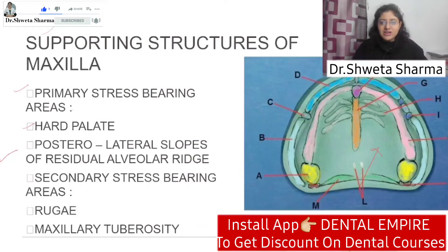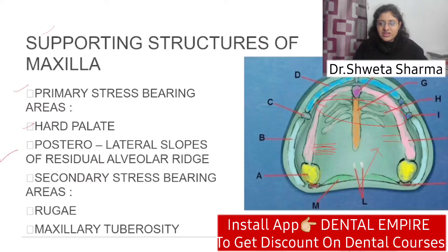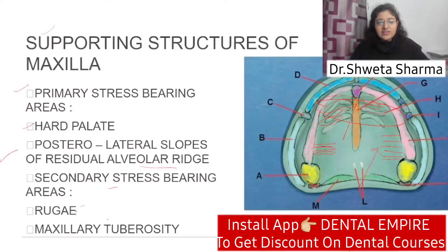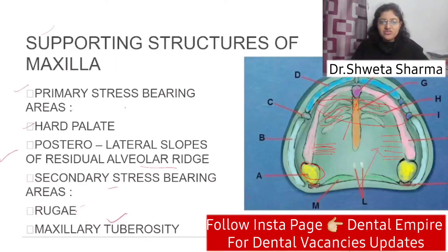The first primary stress bearing area is the hard palate. The second is the posterior lateral slopes of the residual alveolar ridge — this is the posterior lateral slope. What are the fibrous bands of the ridge? The third is the maxillary tuberosity, which is a hard part of the ridge where force can also be applied. So these four things can help support complete dentures.